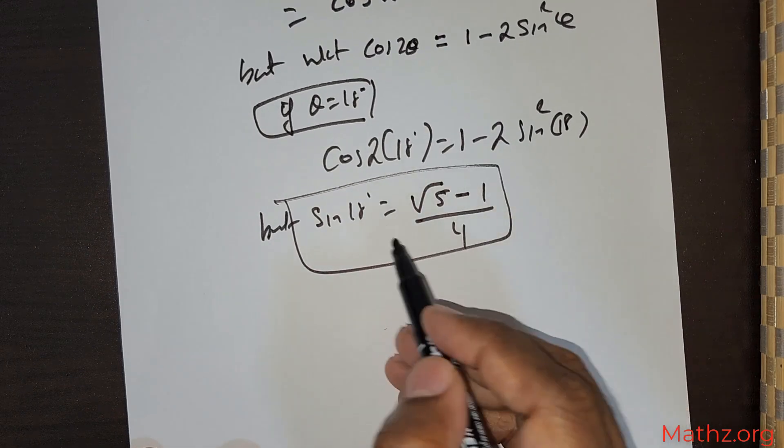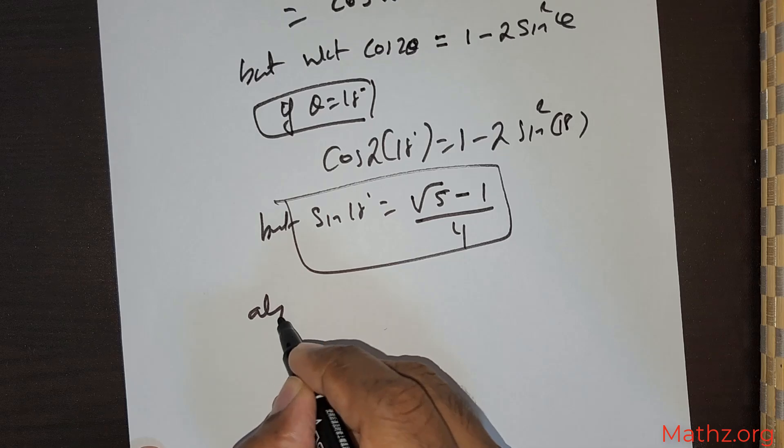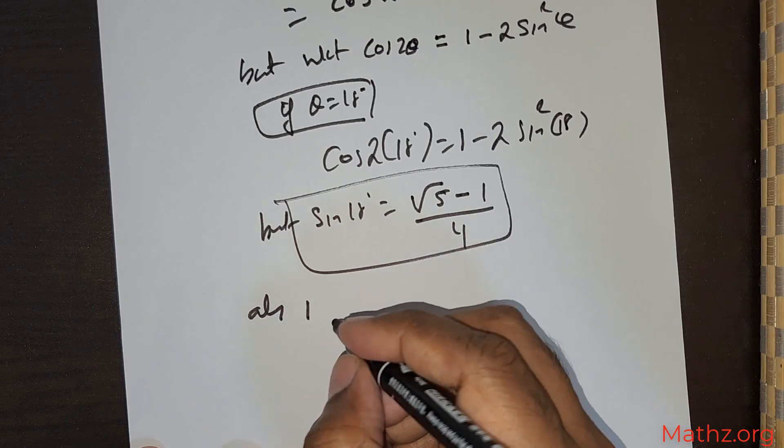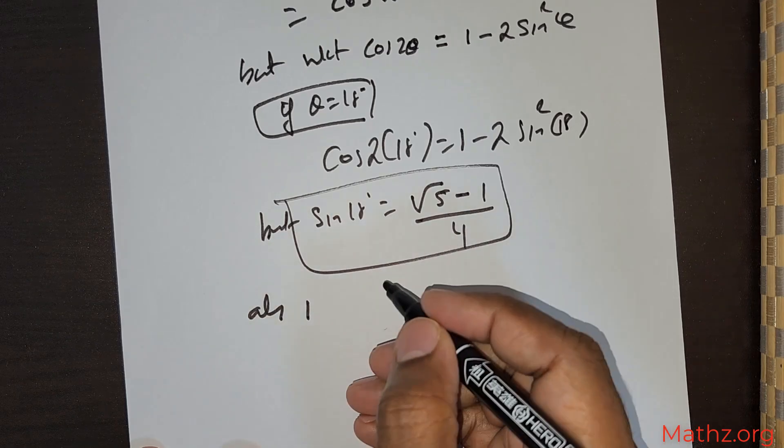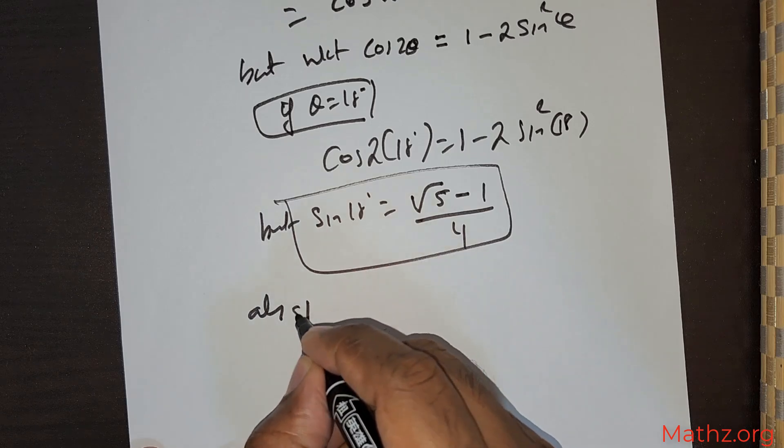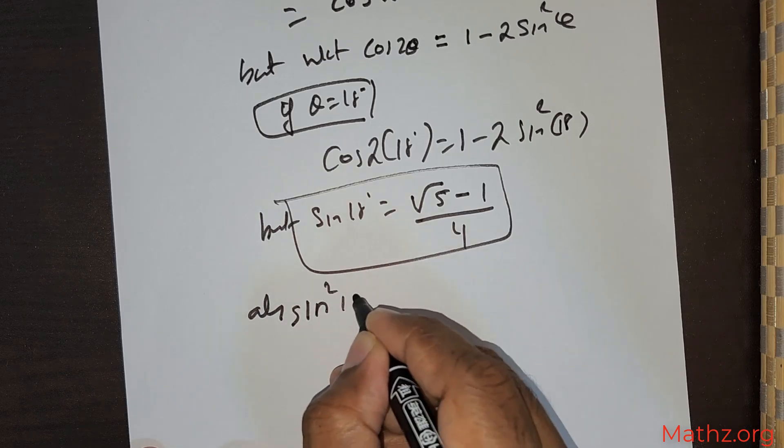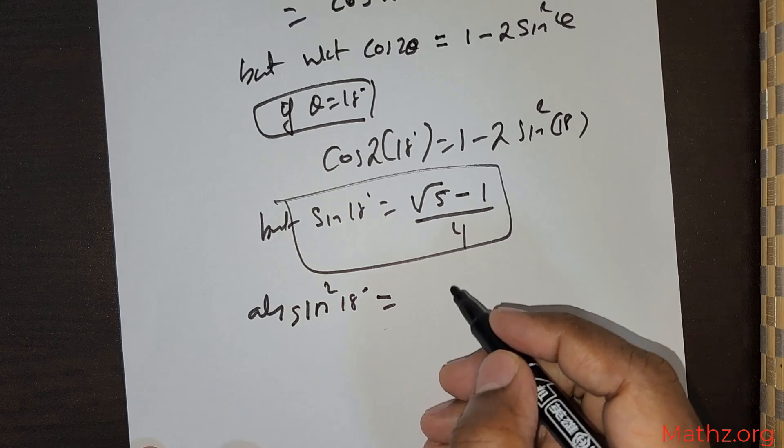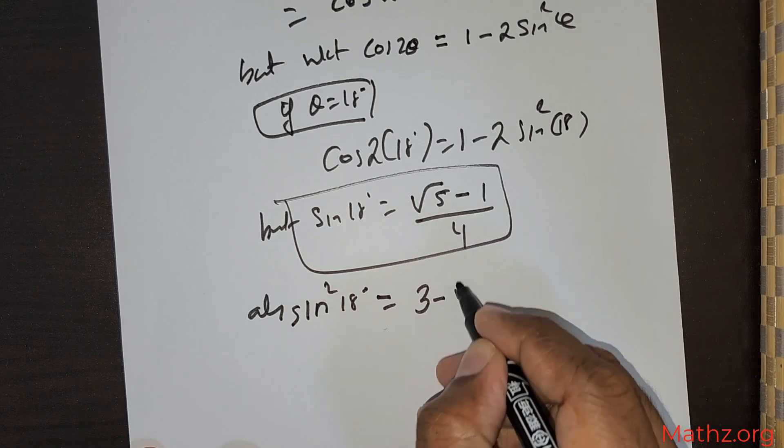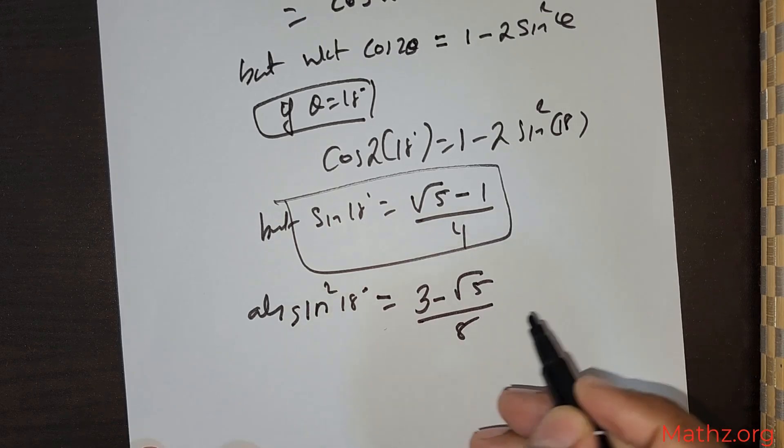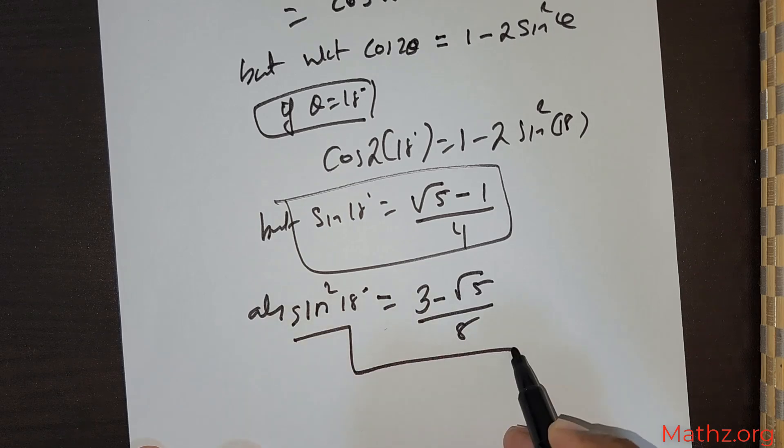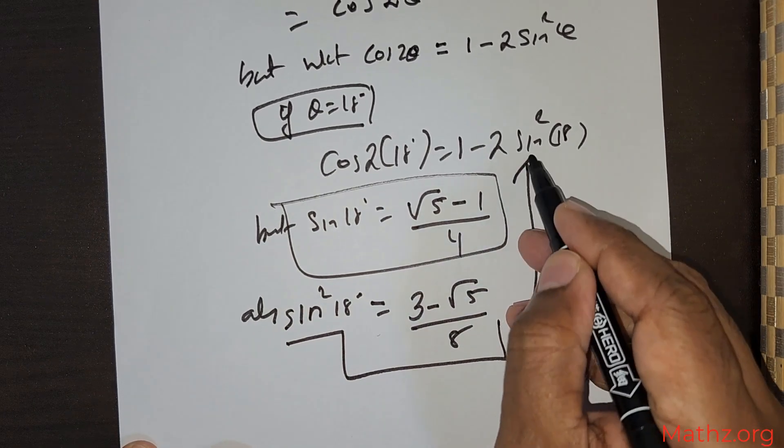Now I need to take this value and substitute it here. Also sin² 18°, I just showed you what sin² 18° is. Sin² 18° has been found to be (3 - √5)/8. So take this value and substitute it here.